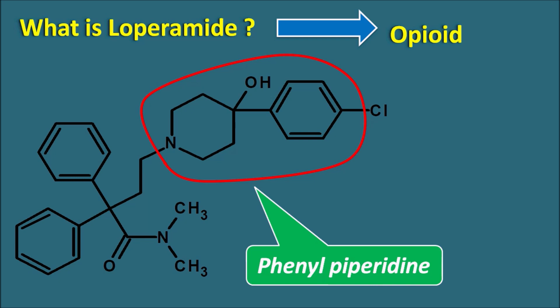When the opioid structure is modified, it can produce 4-anilinopiperidines as well as 4-phenylpiperidines, and Loperamide belongs to the 4-phenylpiperidines. What is the use of this drug?